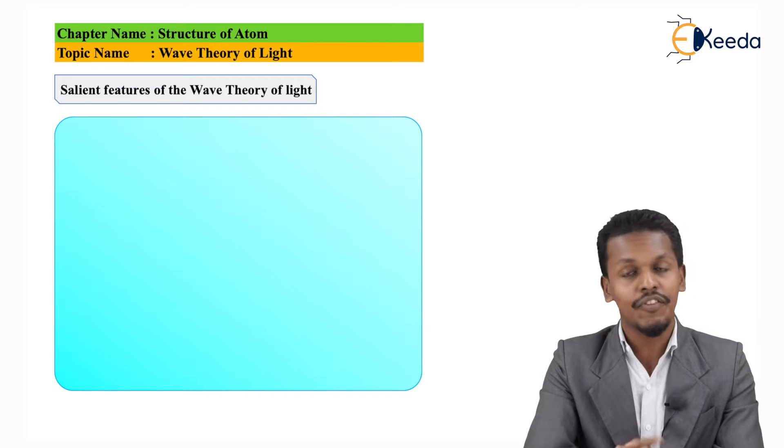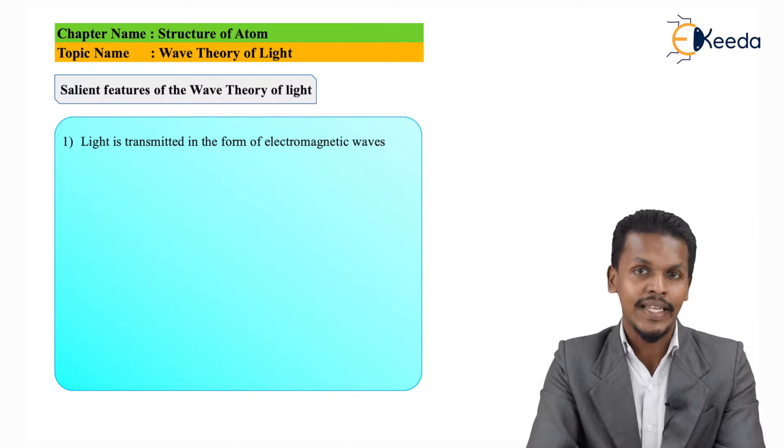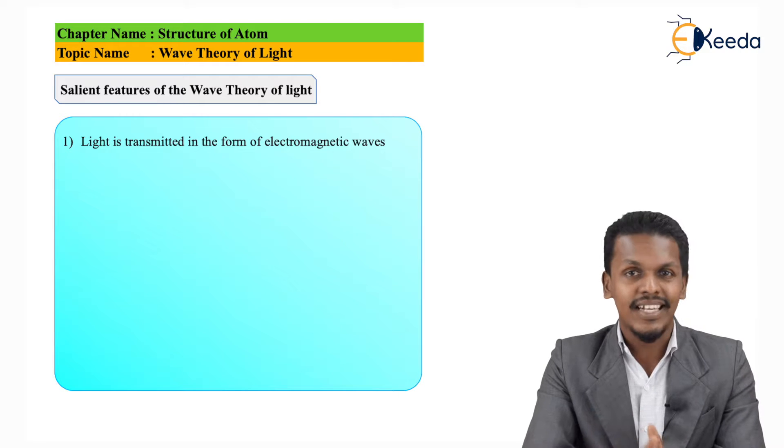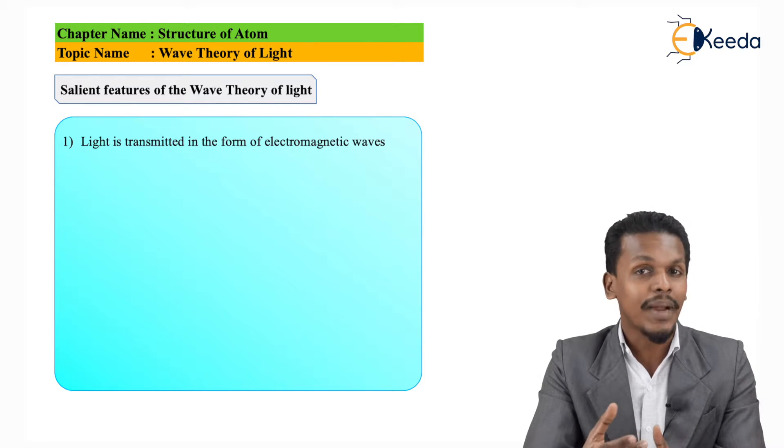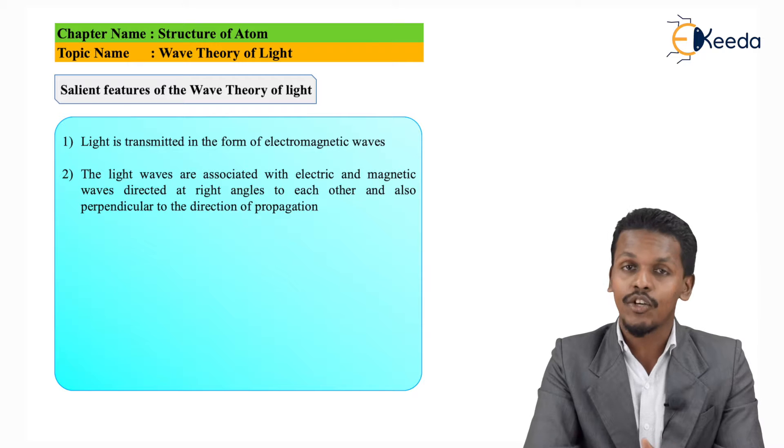Friends, here I am going to talk about the salient features of the wave theory of light. So talking about the first point - the light travels in the form of an electromagnetic wave. So what is actually an electromagnetic wave?